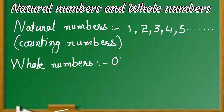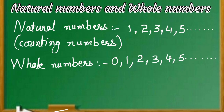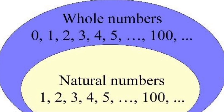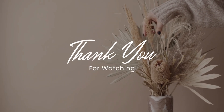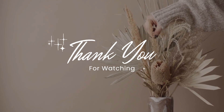Whole numbers also increase by one each time. Here you can see that all natural numbers can be called whole numbers, but all whole numbers cannot be called natural numbers, because whole numbers also include zero, which is not a natural number. I hope you have understood the concept of natural numbers and whole numbers. Thank you for watching.